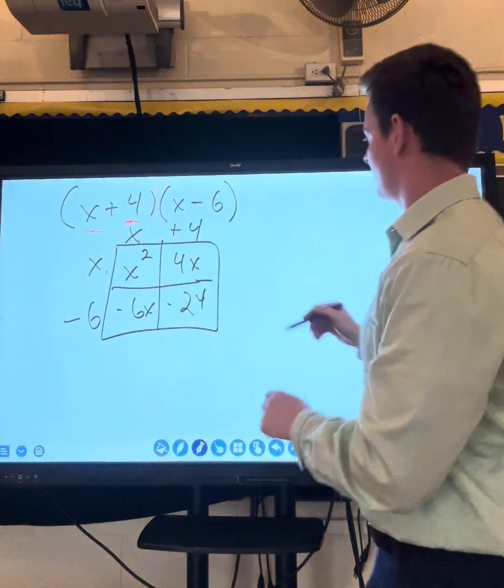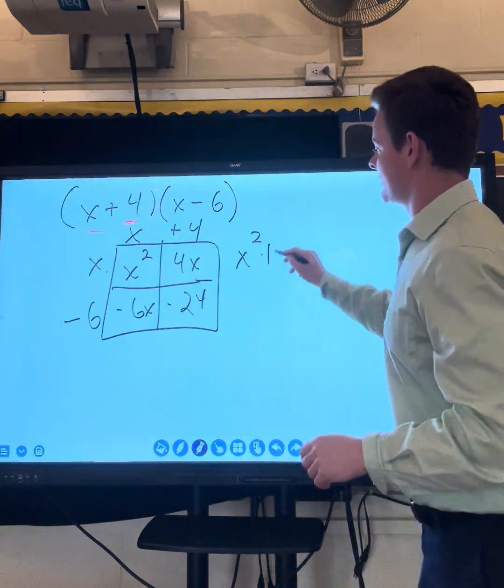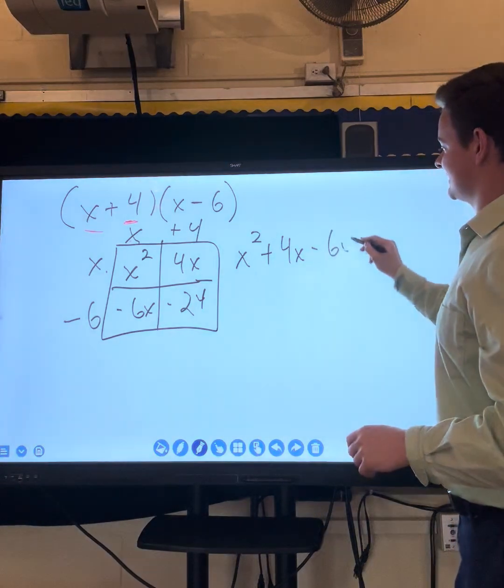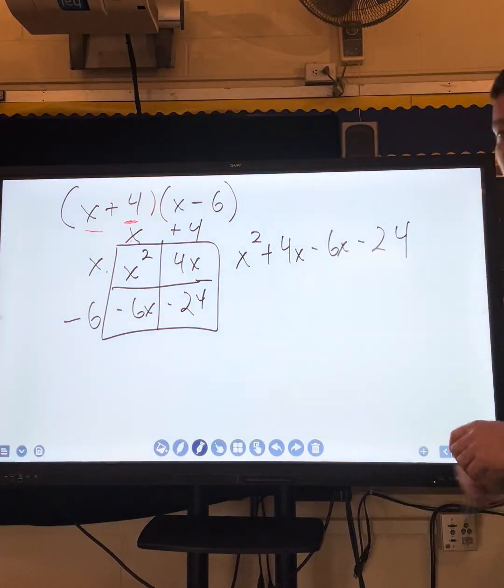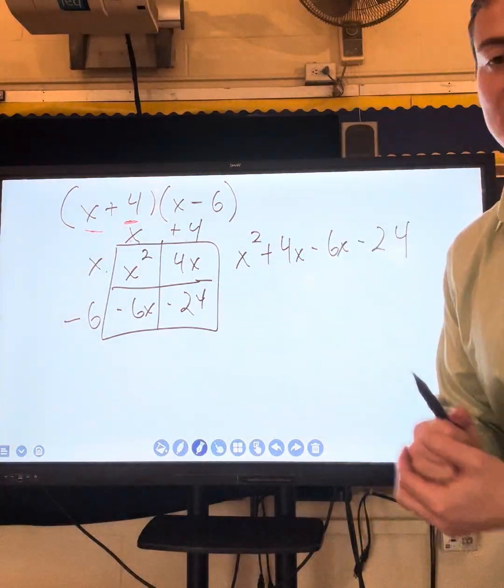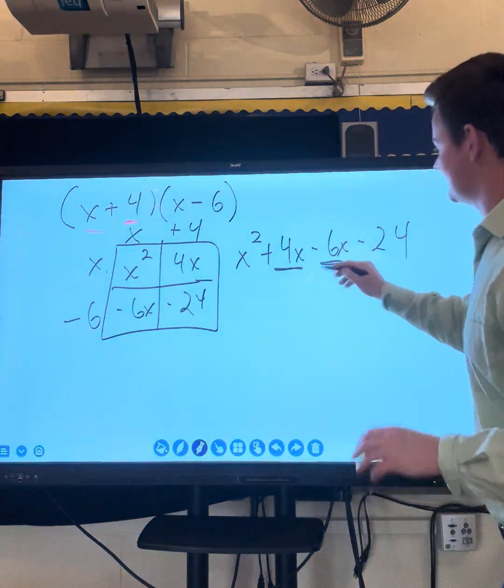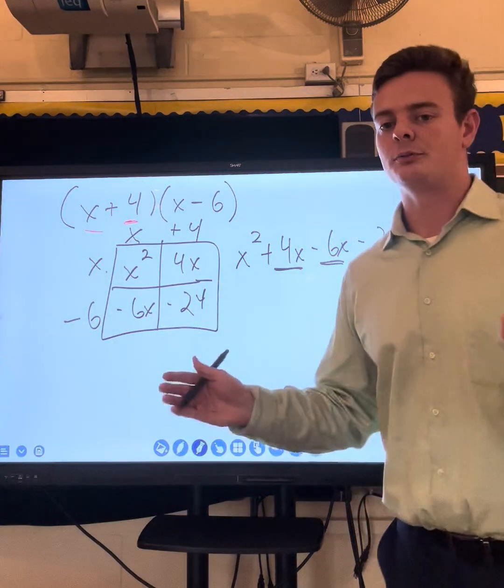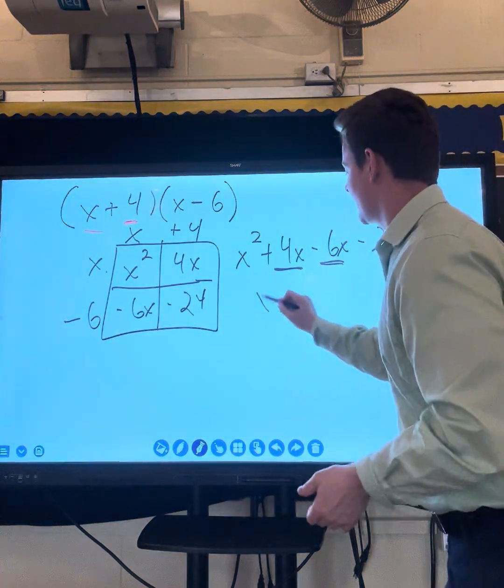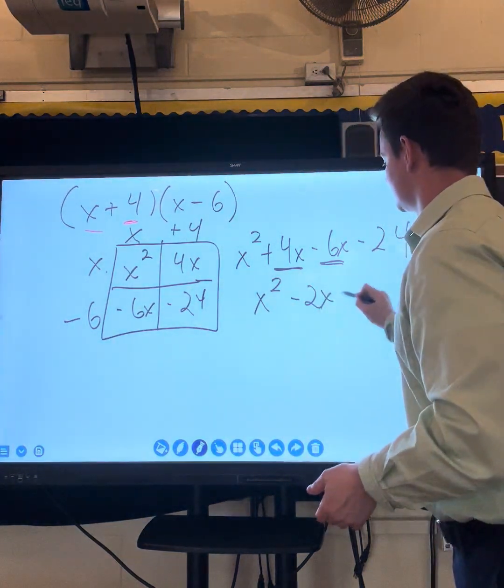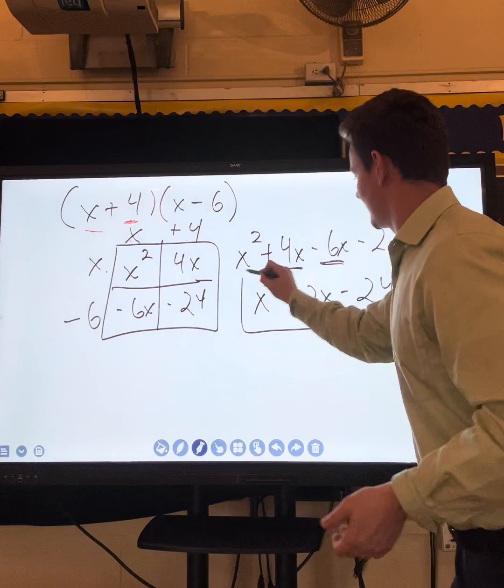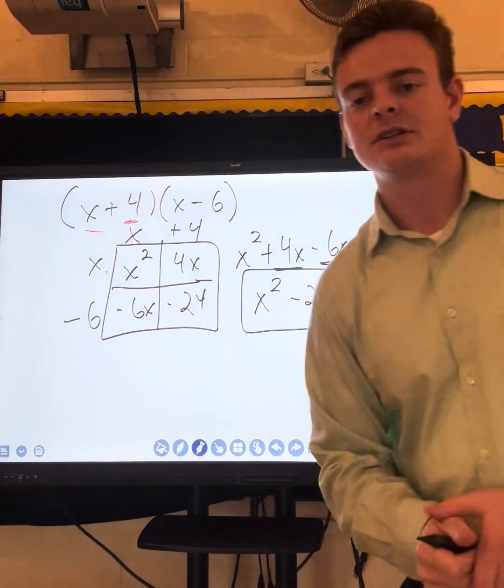Then I just write all my answers out: x squared plus 4x minus 6x minus 24. Then I see if I can combine any like terms. I have 4x and minus 6x. Those combine to negative 2x, giving x squared minus 2x minus 24. And that's how you use the box method.